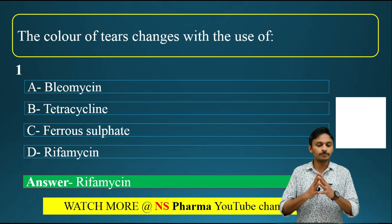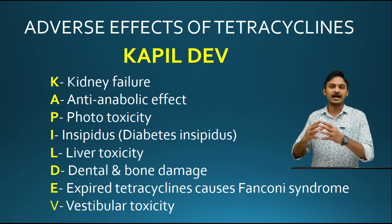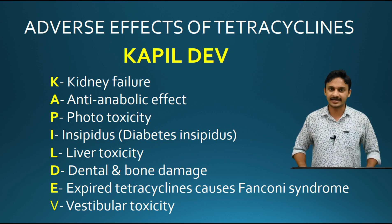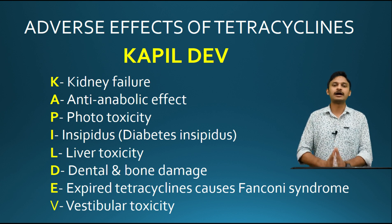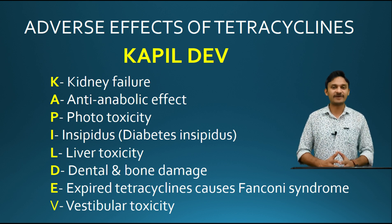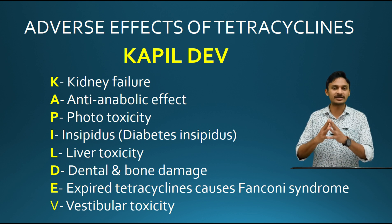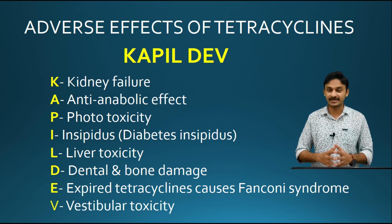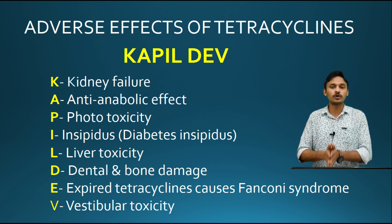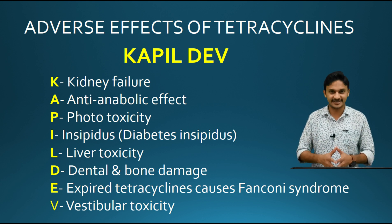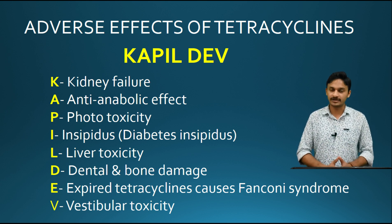For option B, tetracycline, we can use a mnemonic code to study its adverse effects: 'KABIL DEV' - the Indian all-rounder. K represents kidney failure. All tetracyclines are contraindicated during kidney failure except doxycycline, because doxycycline is excreted in feces, so it is not contraindicated in kidney failure.